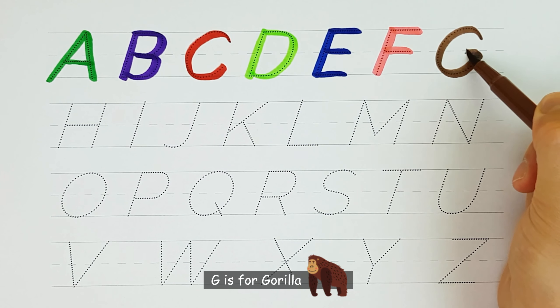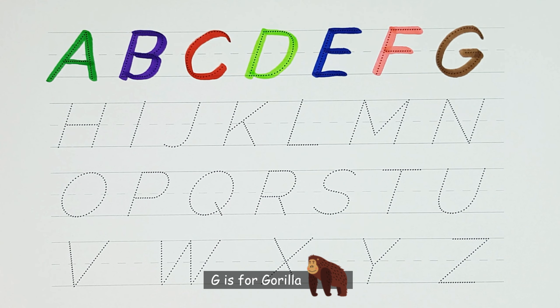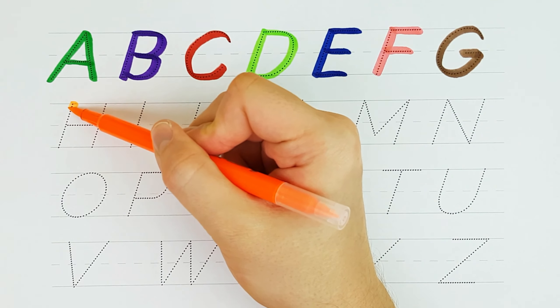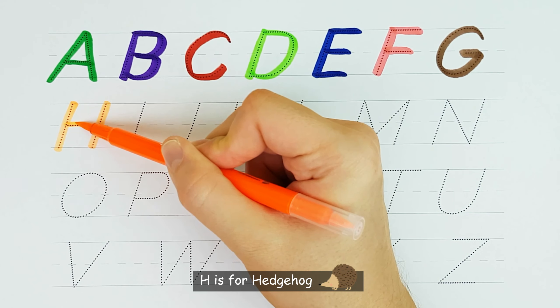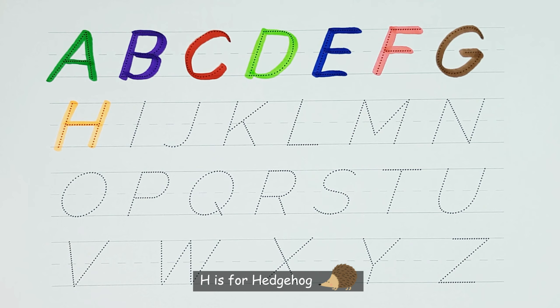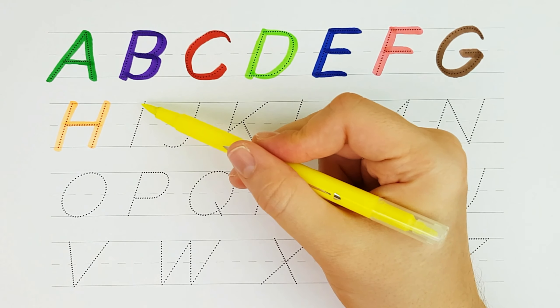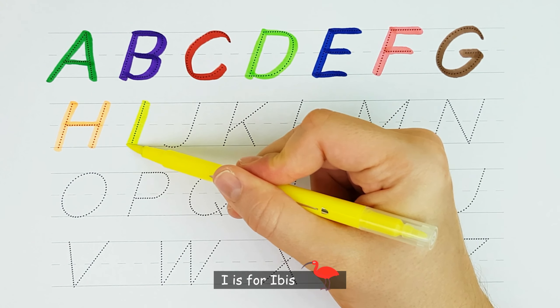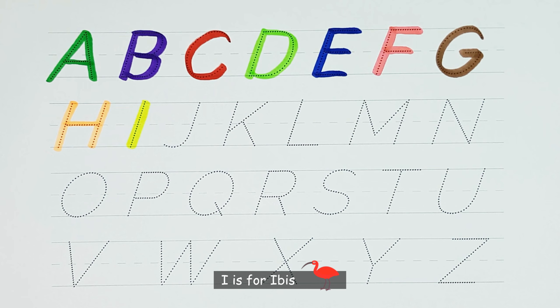G. G is for gorilla. H. H is for hedgehog. I. I is for ibis.